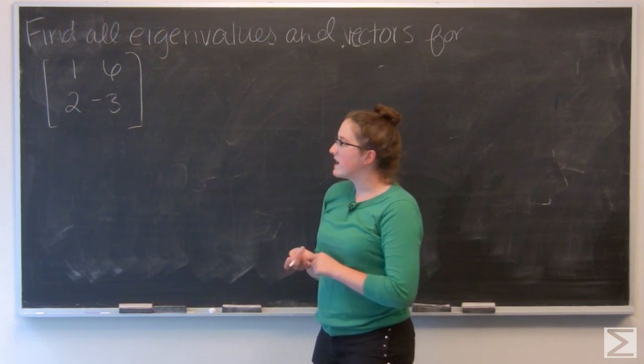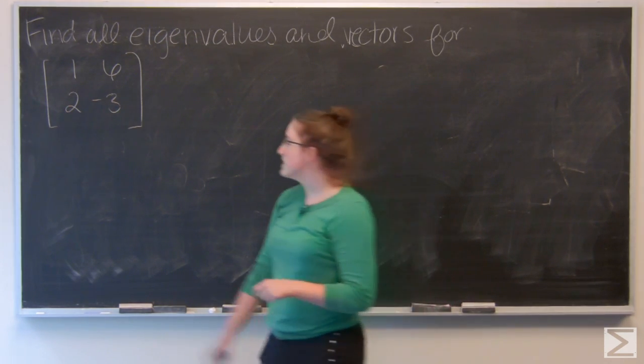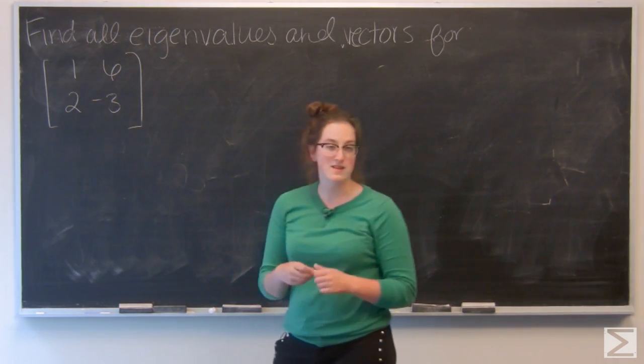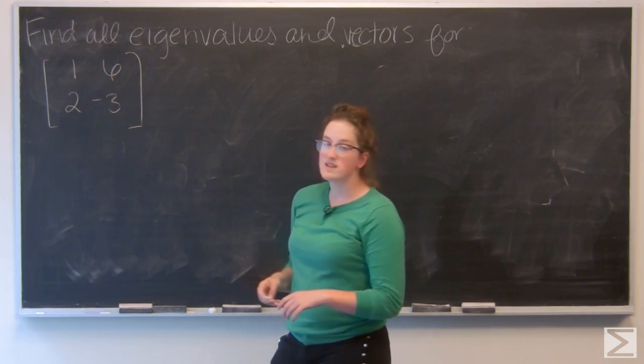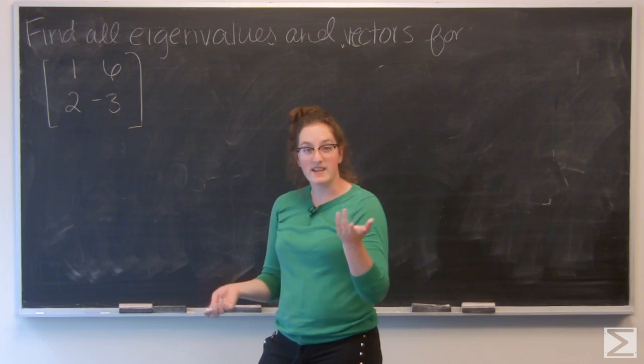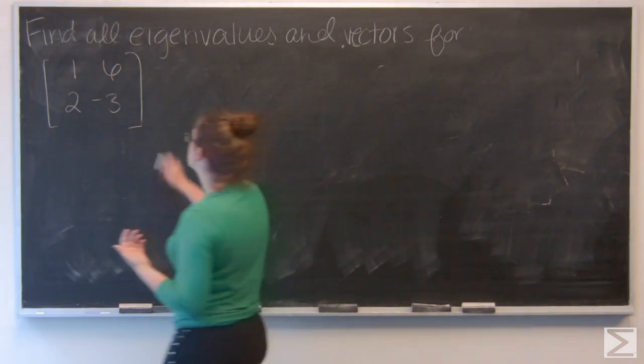So to find the eigenvalues, I want to take the determinant of this given matrix minus lambda times the identity matrix. So basically I'm going to subtract the lambda along the main diagonal and take the determinant, set it equal to 0, solve for lambda.